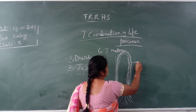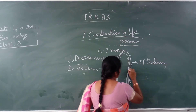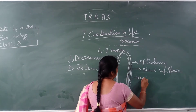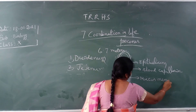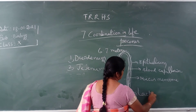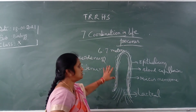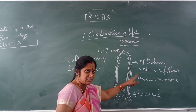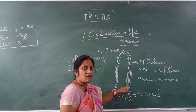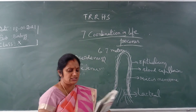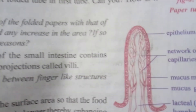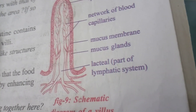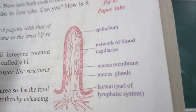So the structure of a villus contains: epithelial tissue, a network of blood capillaries, mucous membranes, mucous glands, and a lacteal. These are the parts of the villus. If you write these parts, you will get two marks. They may ask you to draw the diagram and explain the importance of the villi.